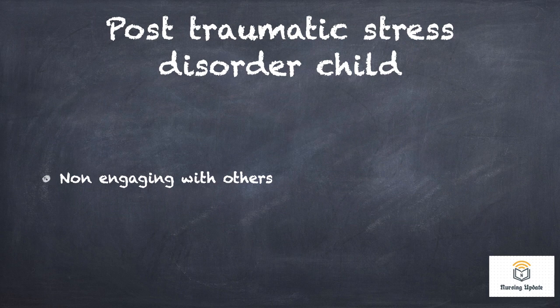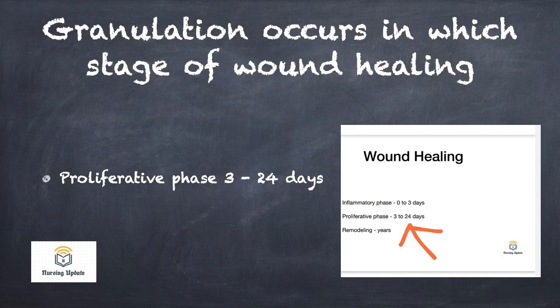Post-traumatic stress disorder in a child: they will be aloof and will not engage with others. Granulation occurs in which stage of wound healing? Wound healing has three stages — granulation and new tissue formation occur in the proliferative phase, from day 3 to day 24.